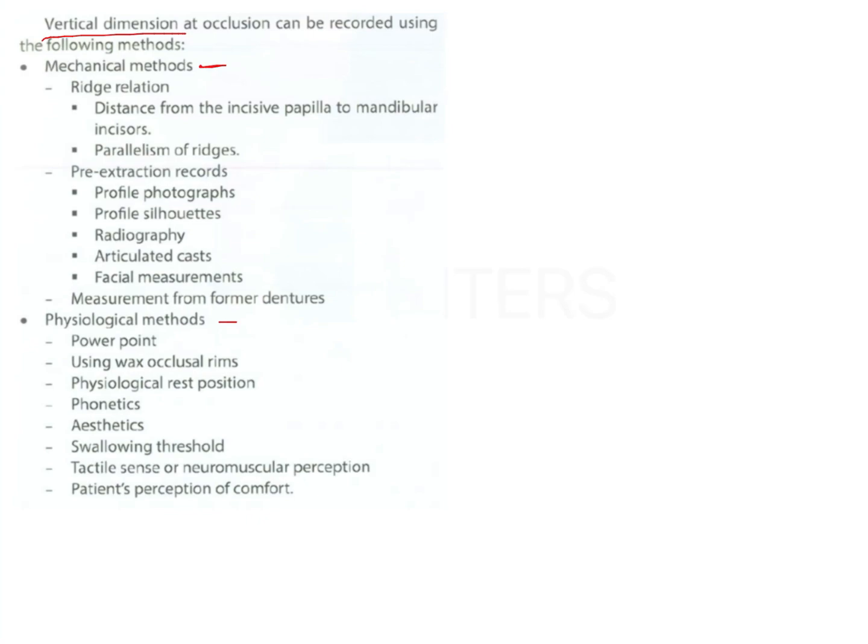So mechanical methods is by assessment of ridge relation or by pre extraction records. Ridge relation can be from incisive papilla to the mandibular incisor or by using the parallelism of ridges. Pre extraction records like photographs, silhouettes, radiographs, articulated casts, facial measurements. So this facial measurements is where you will consider Willis guide and measurement from former dentures.